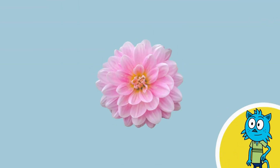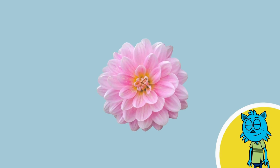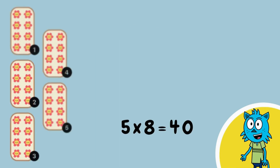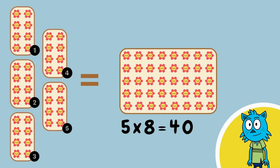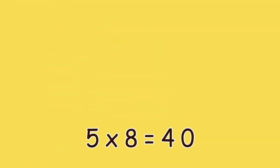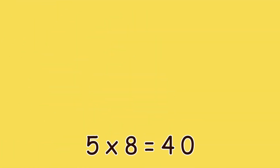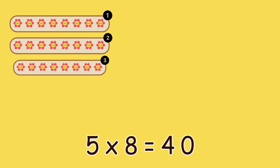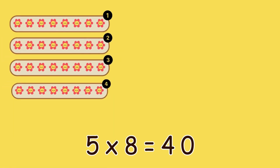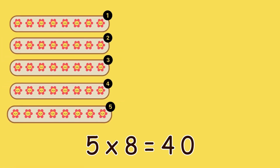Time for some flowers. Five groups of eight flowers equals forty flowers. Five times eight — one, two, three, four, five — is forty.